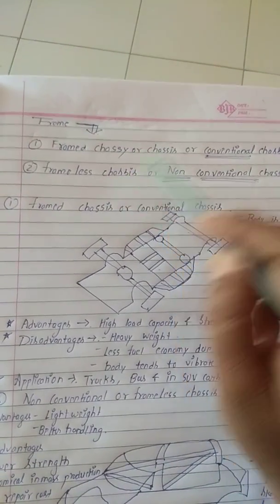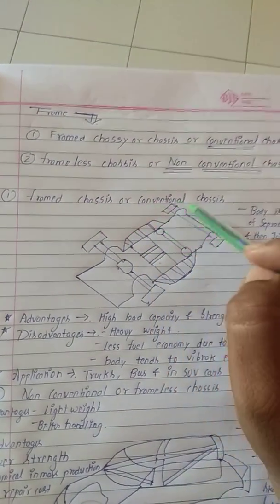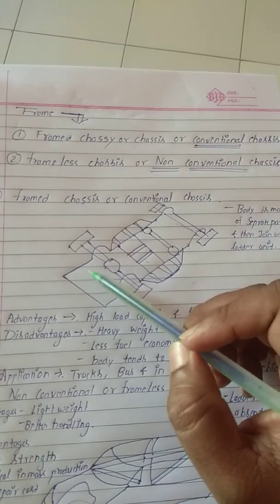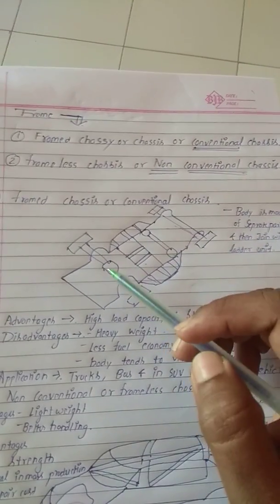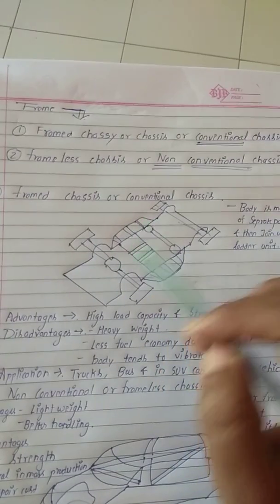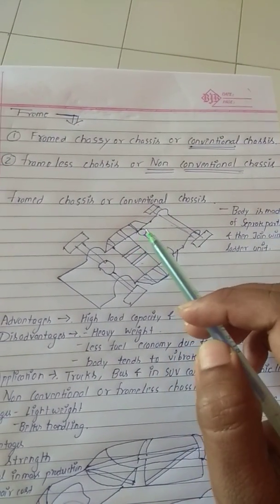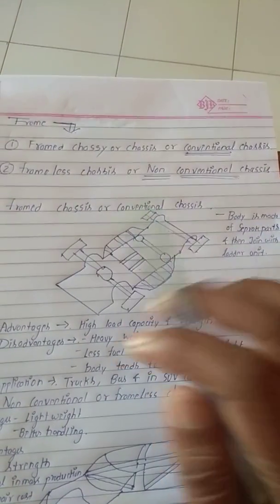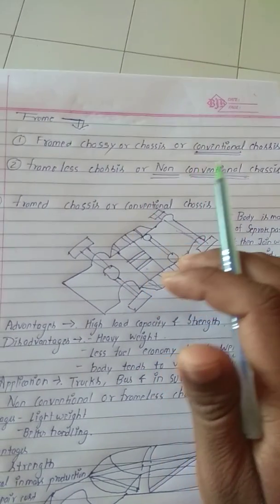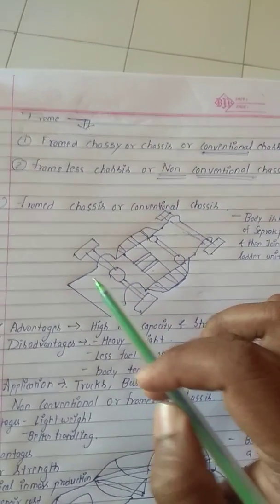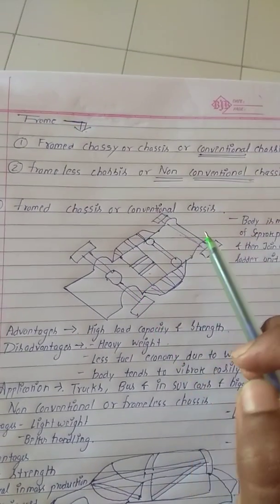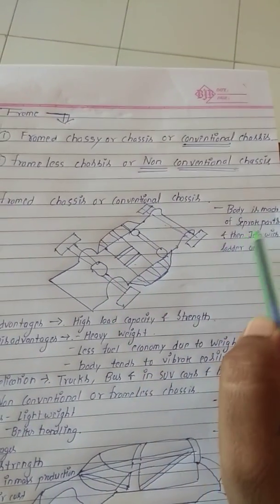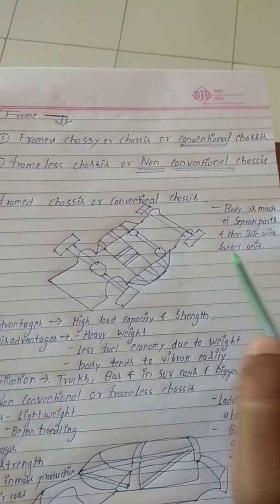We will be discussing one by one. First of all, the frame chassis or the conventional chassis. This is a framed chassis. Framed chassis means this is a type of ladder unit. The body is connected to this. In the frame chassis or conventional chassis, the body is made up of separate parts, which are attached to this ladder unit.